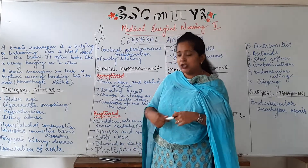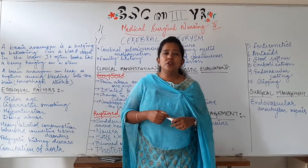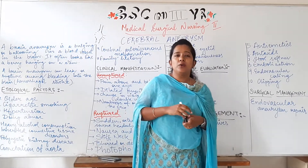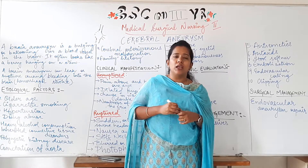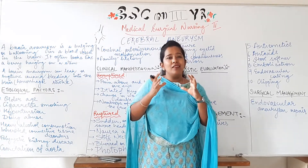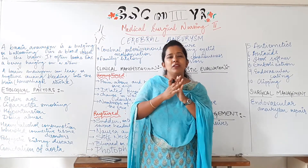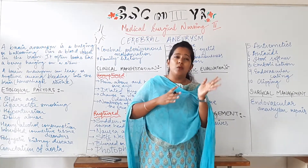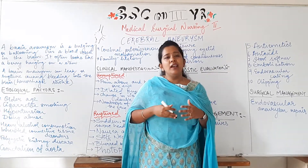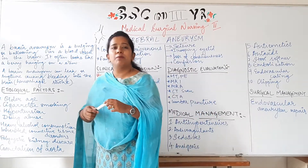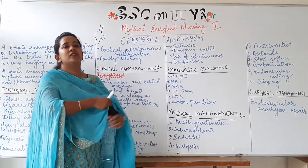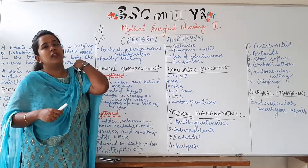Apart from that, there can be coarctation of the aorta, which is a pediatric or congenital disorder where the aorta is abnormally narrow. Since the aorta is the largest artery, when it is narrowly constricted, it exerts a huge workload on the left side of the heart and pressure on the pulmonary systems. Children born with coarctation of the aorta also have conditions of connective tissue and blood vessel disorders and hypertension, which can cause aneurysm.